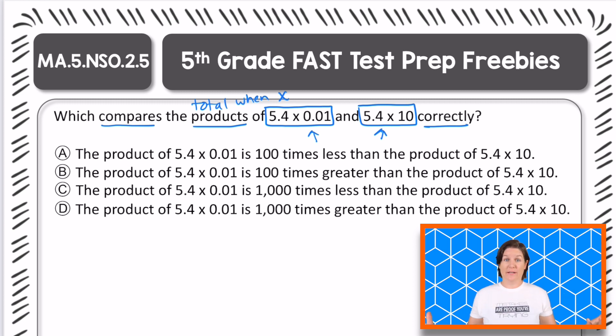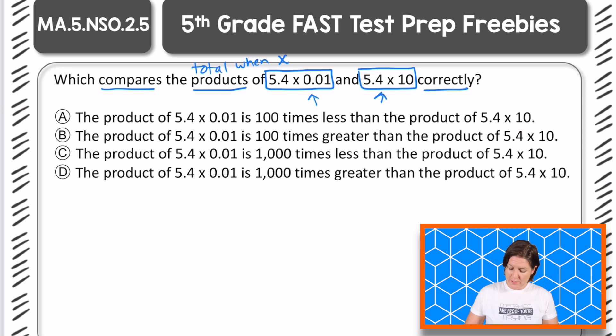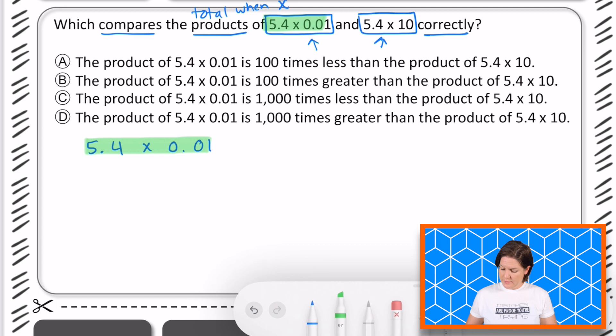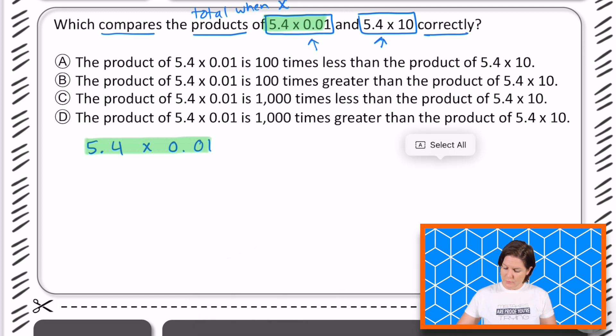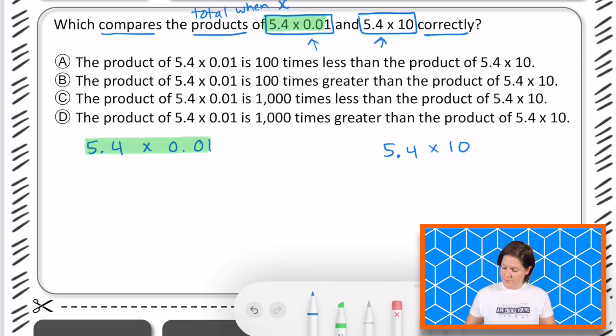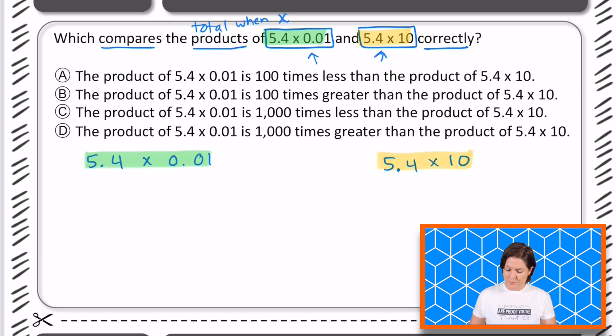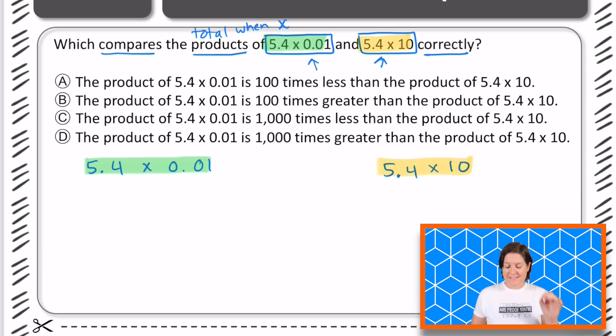Okay, so here let's take 5.4 times 0.01. I'll make that this one. And then on this side, we'll compare 5.4 times 10. And we'll call that yellow. Alright, let's do it. So 5.4 times 0.01.